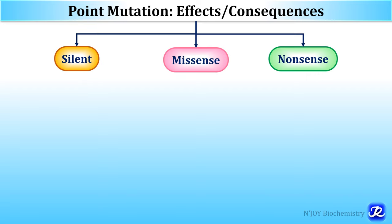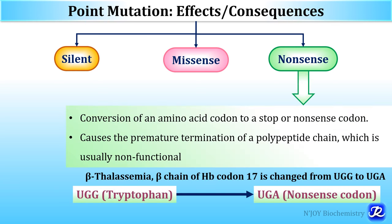The second effect of point mutation is the nonsense effect. Here, there is conversion of an amino acid codon to a stop codon or nonsense codon. When the stop codon is encountered during translation, it leads to premature termination of the polypeptide chain, which is usually non-functional. For example, in beta thalassemia, codon 17 of the beta chain of hemoglobin is changed from UGG (which codes for tryptophan) to UGA, the nonsense codon, leading to premature termination of the polypeptide chain.